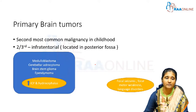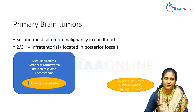The more common infratentorial tumours are medulloblastoma, cerebellar astrocytoma, brainstem glioma, and ependymoma. Infratentorial brain tumours typically present with raised ICP and hydrocephalus signs. Two-thirds of all primary brain tumours in children constitute the infratentorial group.